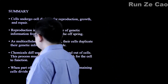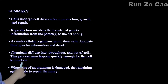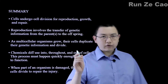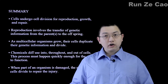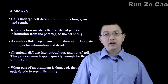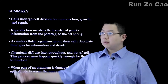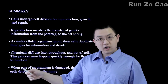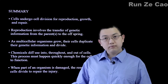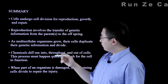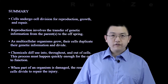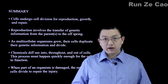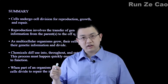In summary, cells undergo cell division for reproduction, growth, and repair. For reproduction in a unicellular organism, the entire act of reproduction is done in one cell division. For a multicellular organism, that's asexual reproduction — you make a clone. Growth applies not just to the cell's own growth — pinching off into two cells — but also to the organism's growth, such as in you or me.